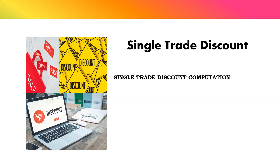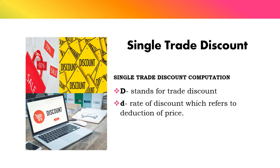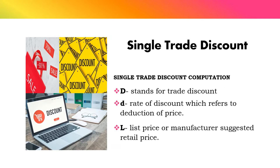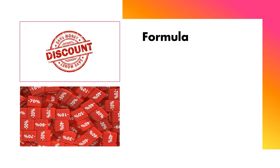Let me present the single trade discount. Before we calculate this type of discount, let us familiarize ourselves with the terminologies. Capital letter D stands for the trade discount. Small letter d is the rate of discount, which refers to deduction of price. Capital letter L stands for list price or manufacturer's suggested retail price. The formula for trade discount is: D equals d times L. For discount rate: d equals D divided by L. For list price: L equals D divided by d.